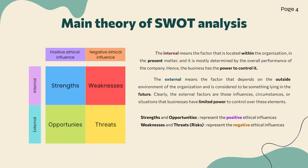For example, external factors are the influences, circumstances, or situations that happen outside the organization, in which the business has limited power to control. Lastly, strengths and opportunities represent positive ethical influences, while weaknesses and threats represent negative ethical influences.